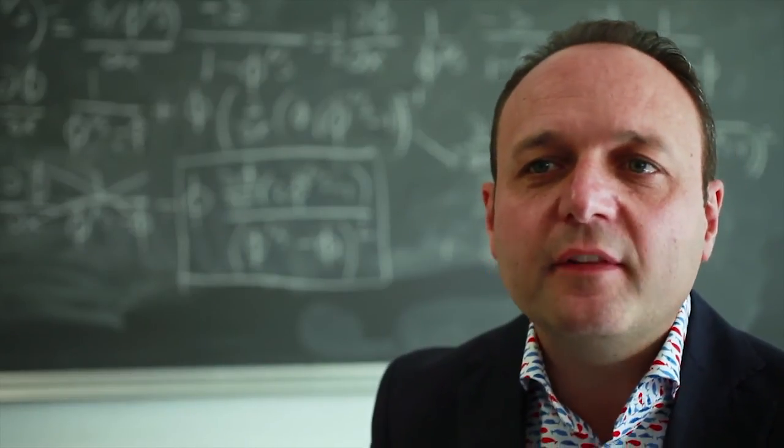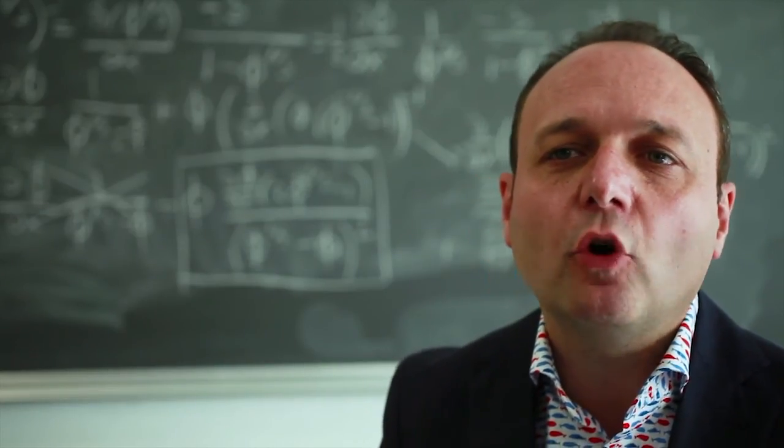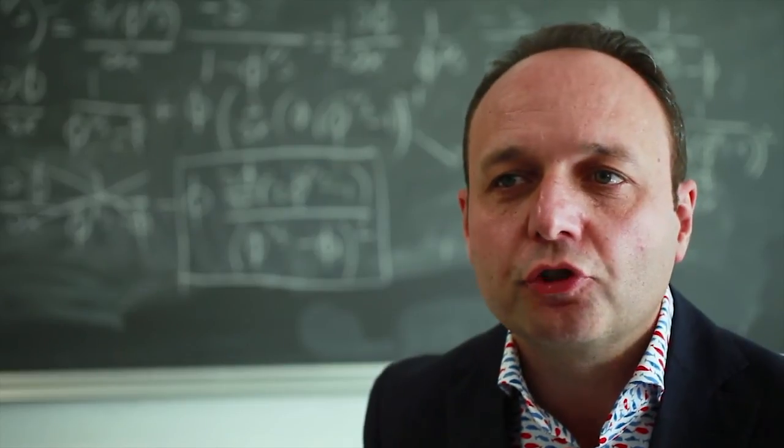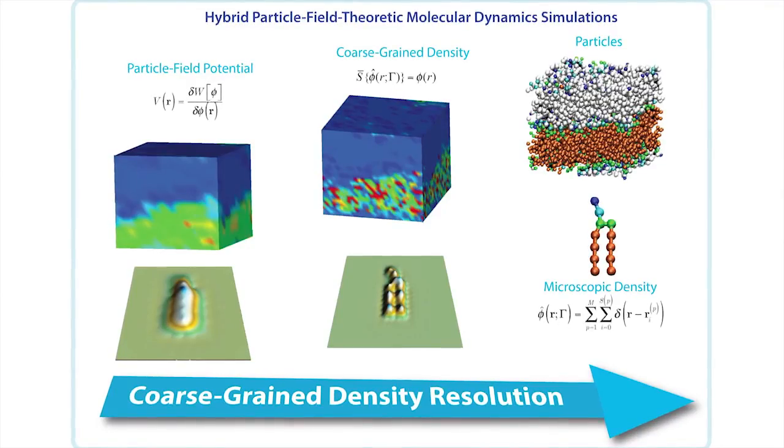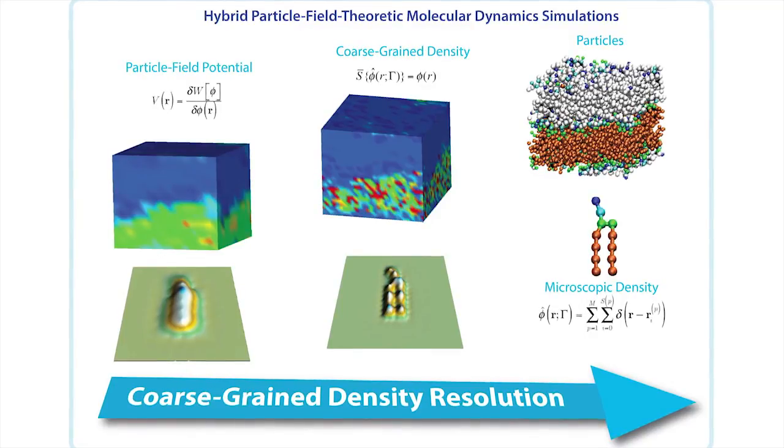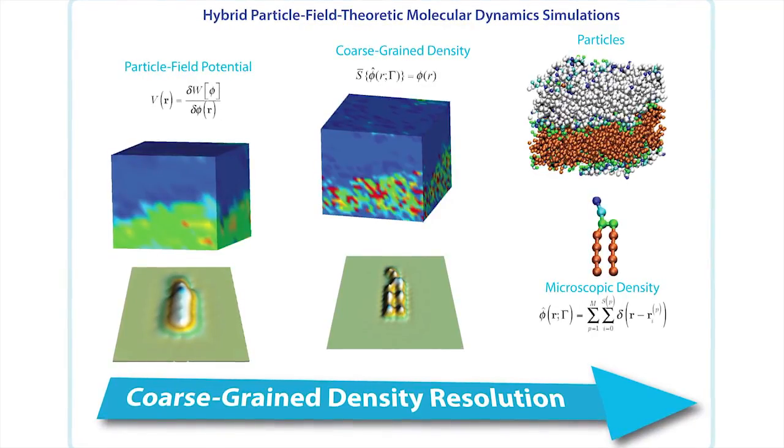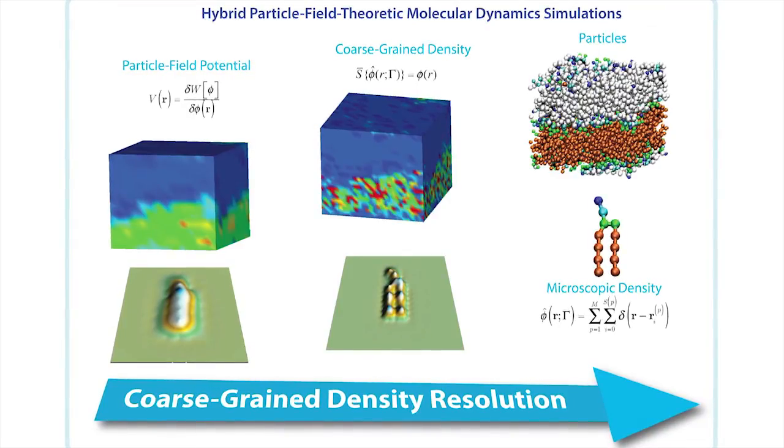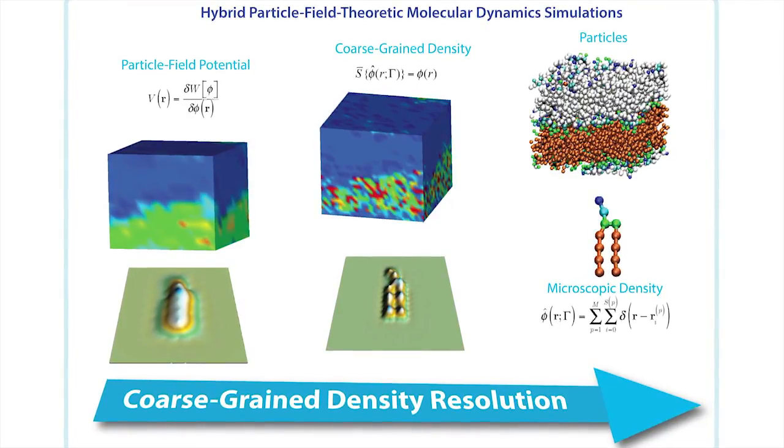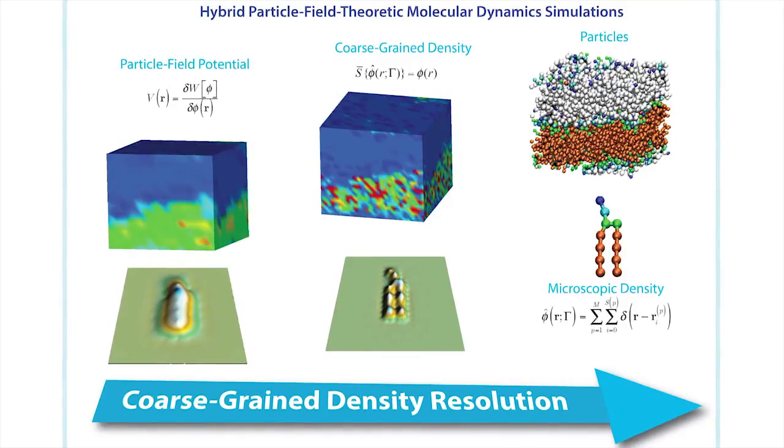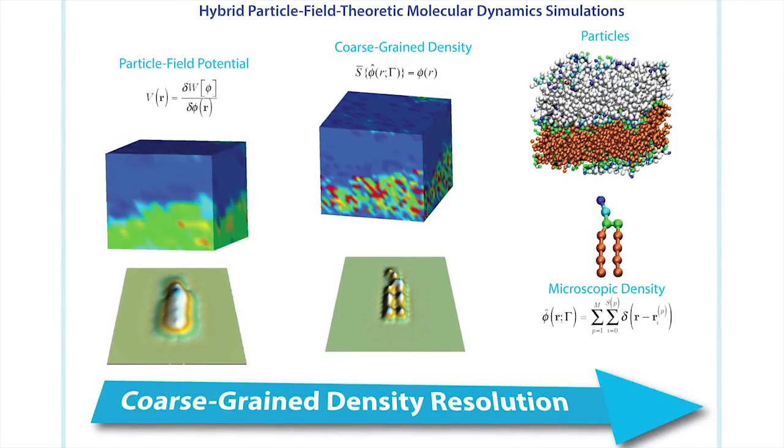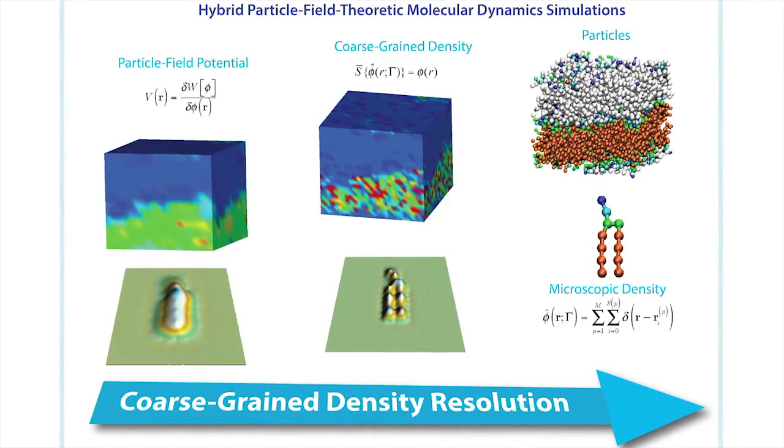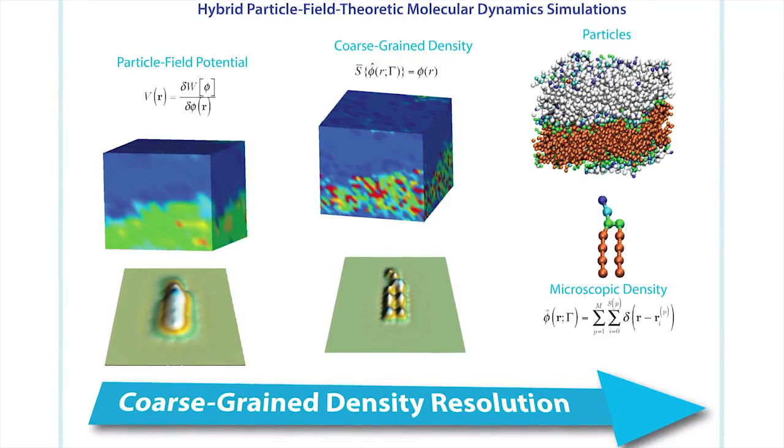Field theory provides a valid scheme for development of an alternative coarse-graining approach. In this approach, the local density of particles, and not their relative distances, drives the motion of the system. In particular, hybrid particle-field molecular dynamics is becoming popular because it allows simulations of large-scale systems, and at the same time provides sufficiently detailed chemistry for the mapping scheme adopted.